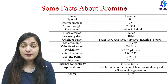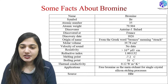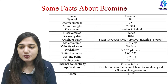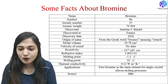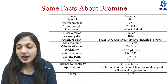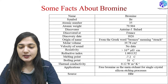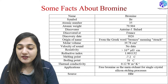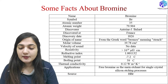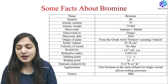Now let's look at the facts about bromine, since we are going to use it as the etchant. Its symbol is Br, atomic number 35, atomic weight around 79.904, discovered by Antoine J. Ballard in France in 1826. Other parameters include origin of name, molecular weight, velocity of sound, resistivity, refractive index, melting point, boiling point, thermal conductivity, and applications. It is used as the main etchant for single crystal silicon etching and the source is hydrogen bromide.